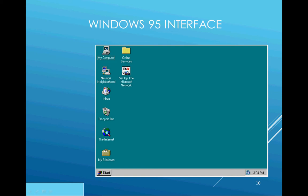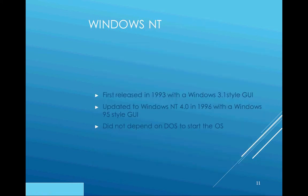Windows NT was Microsoft's server operating system. The first version looked like Windows 3.1, and when Windows 95 came out, they updated the server OS to match, calling it Windows NT 4.0. Unlike its predecessors, it did not depend on DOS to start the operating system.